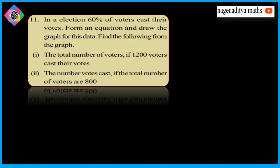Welcome to 9th class. So, remaining problems. In an election, 60% of voters cast their votes. Form an equation and draw the graph for this data. Find the following from the graph: the total number of voters if 1200 voters cast their votes, and the number of voters cast if the total is 800.